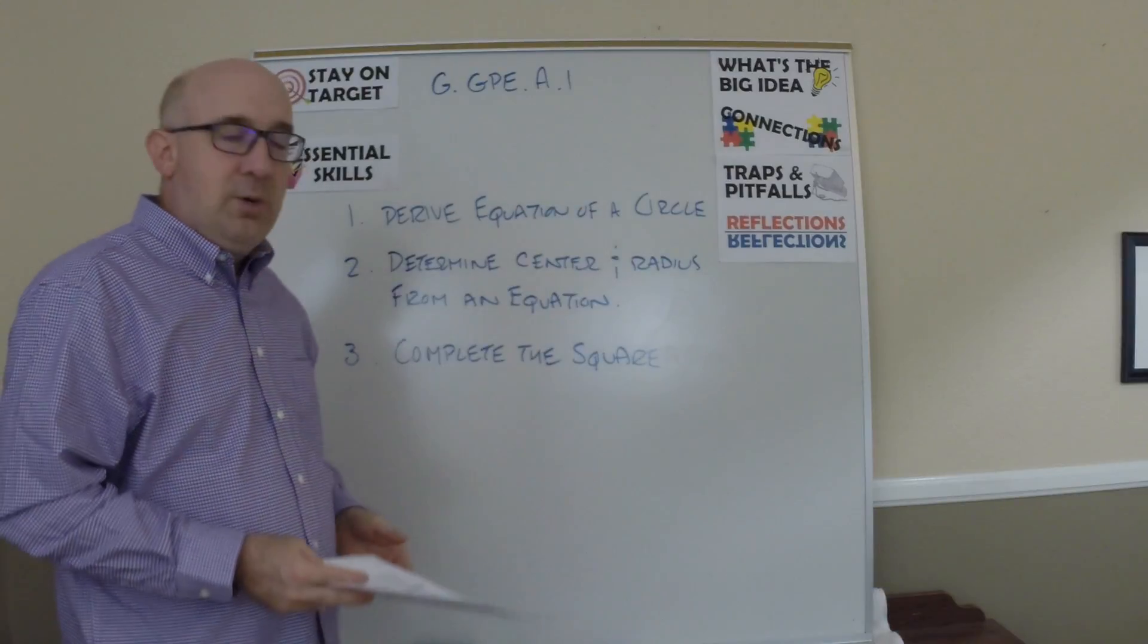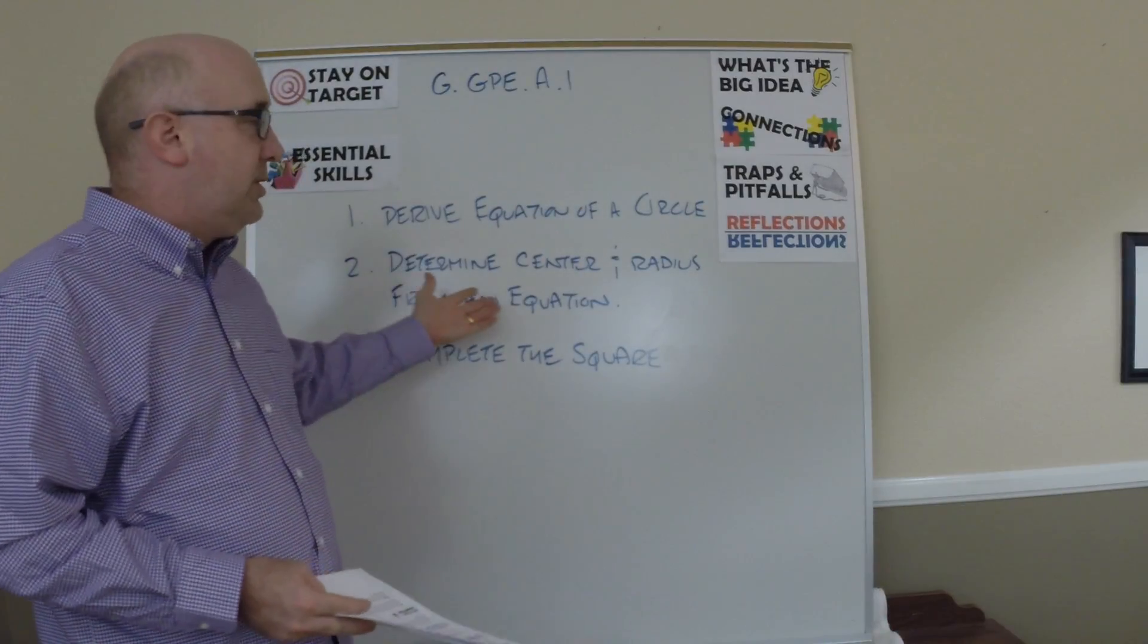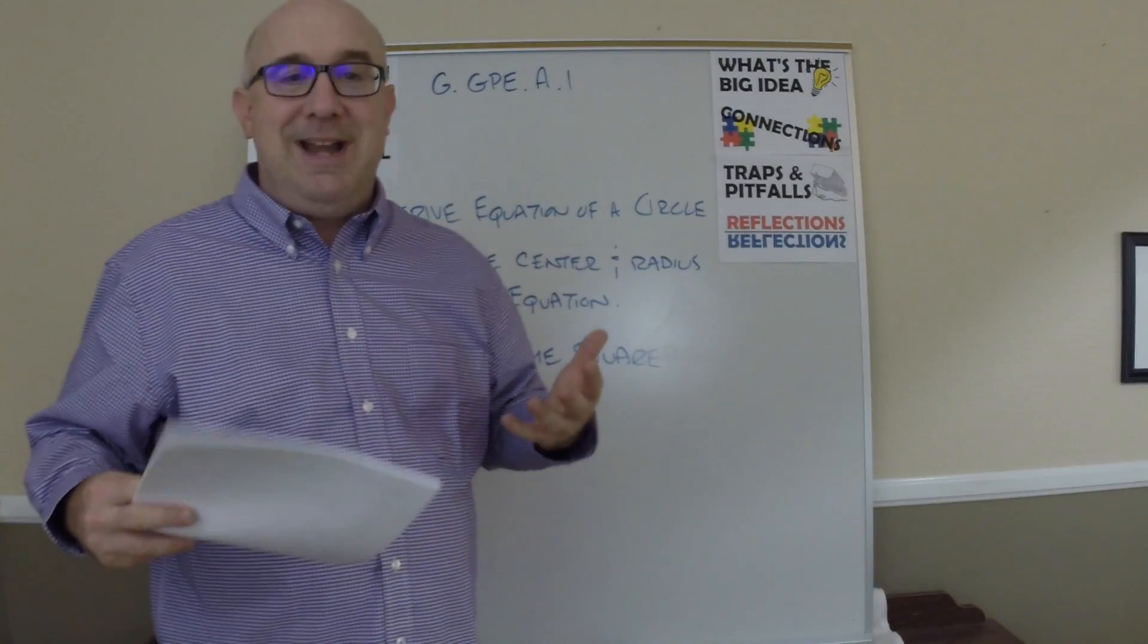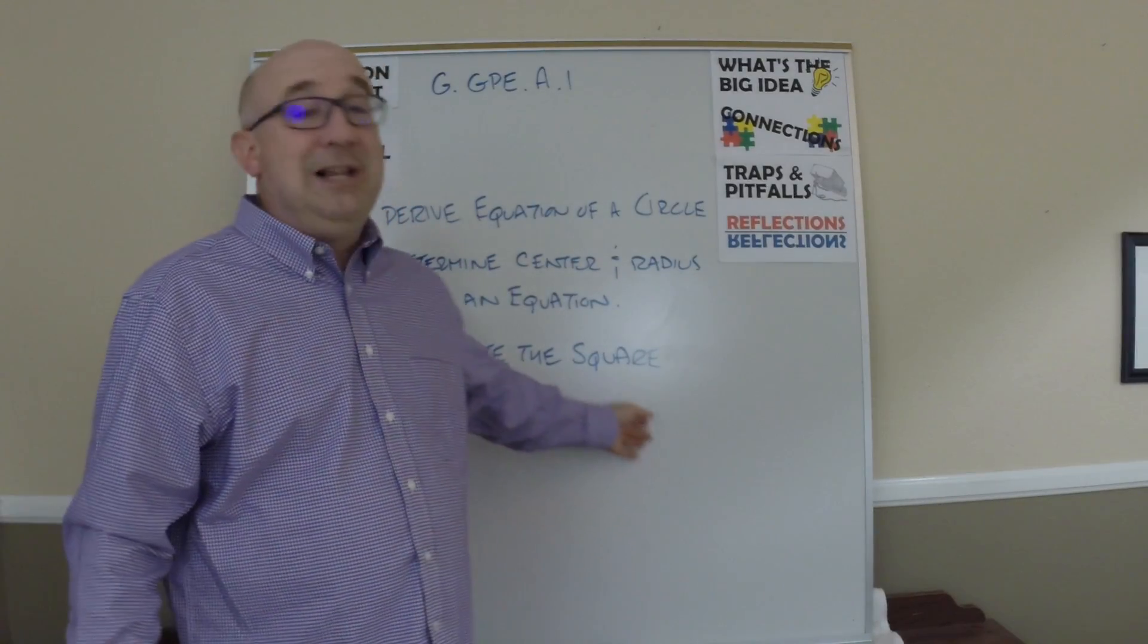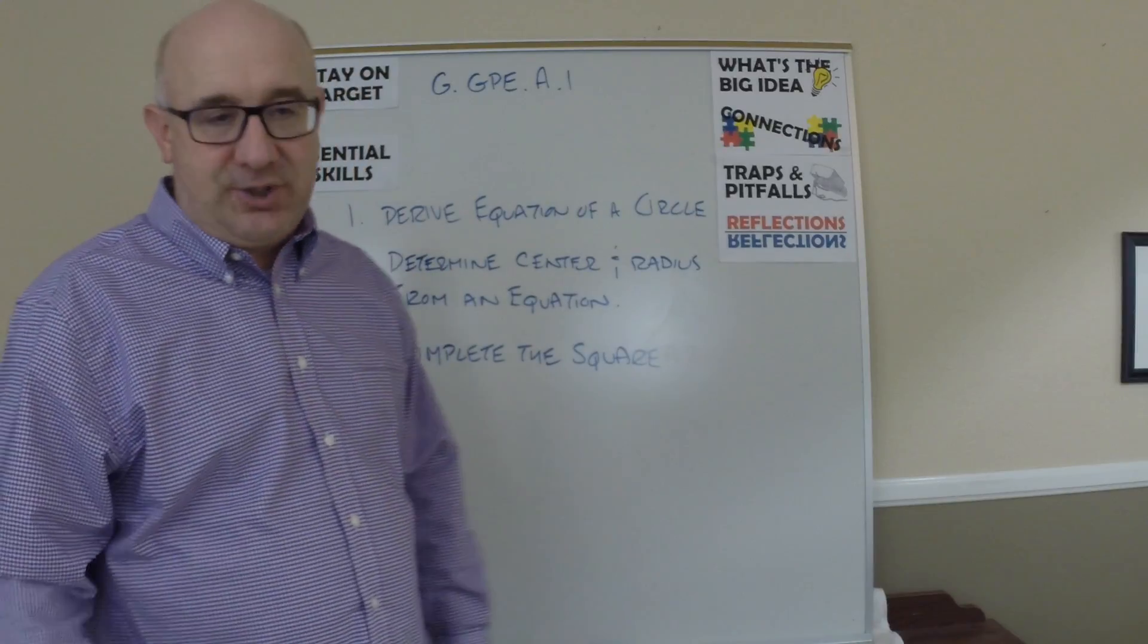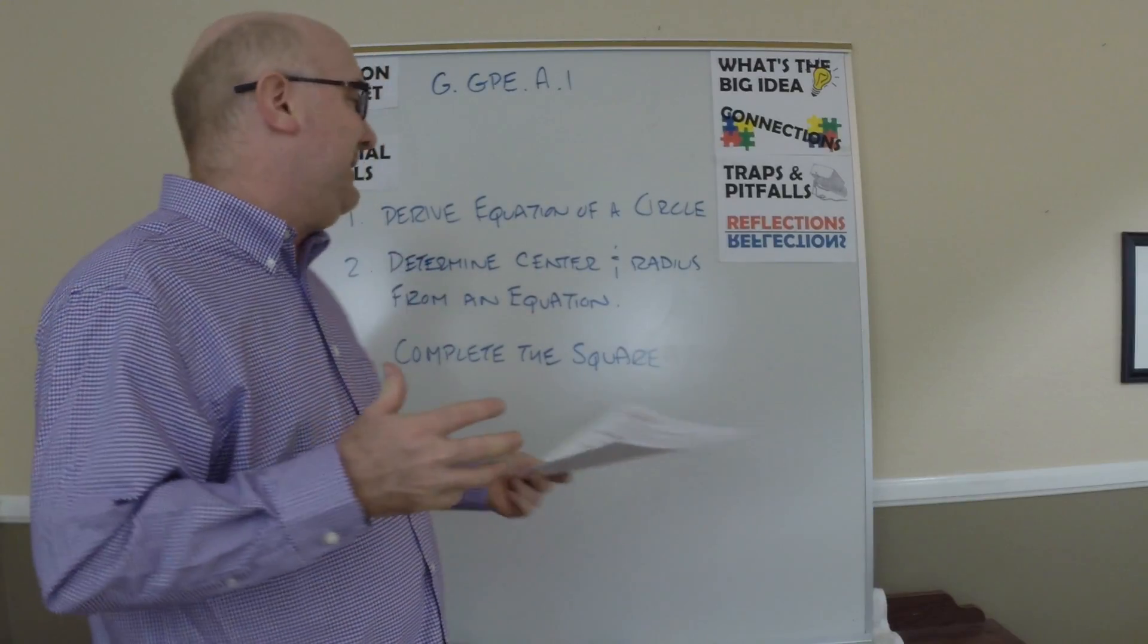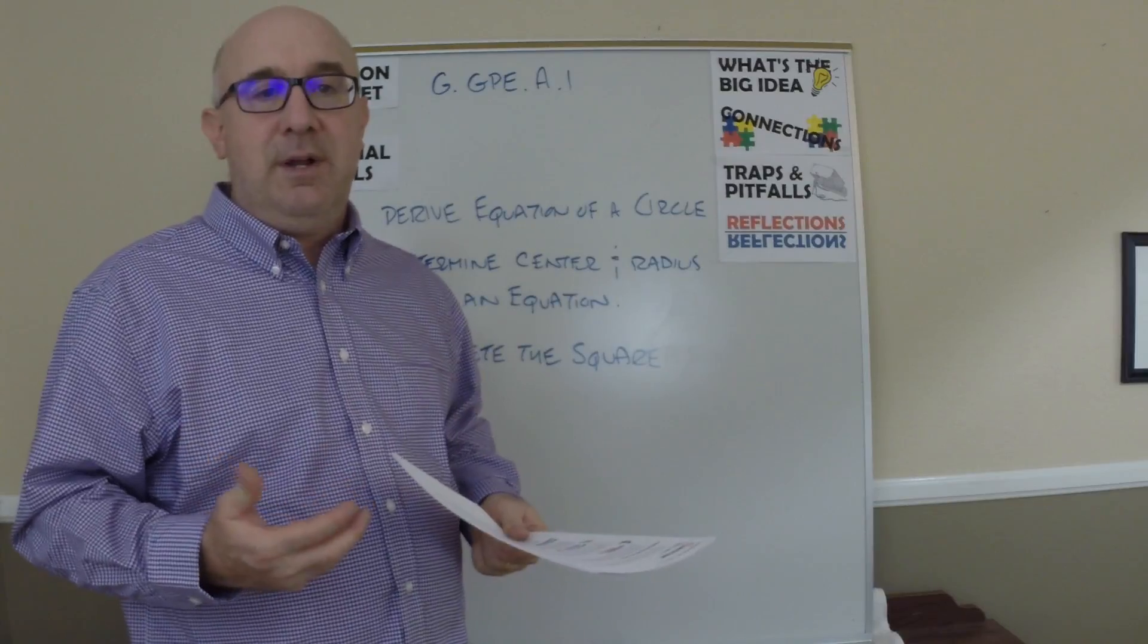So here we derive the equation of a circle. We use the equation of a circle to pull out the radius, to pull out the center. And then we learn, or relearn actually, how to complete the square so that we can get the information out of the equation.